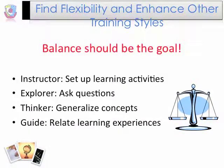It's important to be flexible and enhance your other training styles. Balance should really be the goal — find that balance with each training style in order to meet the needs of each student. The goal of the trainer is to come within eight points of each style, so figure out which style you want to improve. To improve the instructor style, describe the activity and tell learners what they are about to do, and set guidelines for completing the learning activity. Explorers should ask questions allowing learners to interpret their reactions. Thinkers need to generalize concepts from the activity, and to guide learners, ask them to relate their experiences to their work and life.